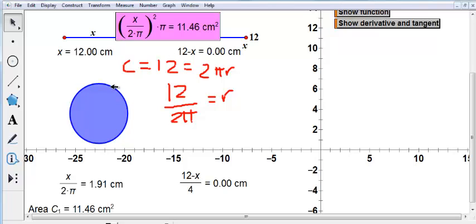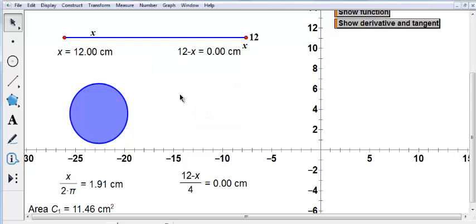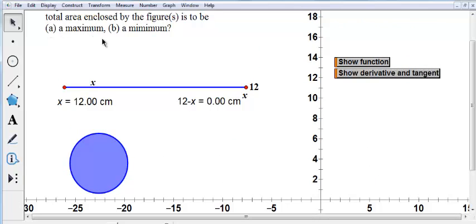So the area of the entire circle is 11.46. If we made the whole thing a square, remember, it was 9 square centimeters. So it looks like the maximum is if we take the entire 12 inches and make it the circumference of the circle, because 11.46 is bigger than 9. So we've done the maximum there. I'm just going to erase this. Now, the question is, so we did part A. Now we want to say, what's the minimum?